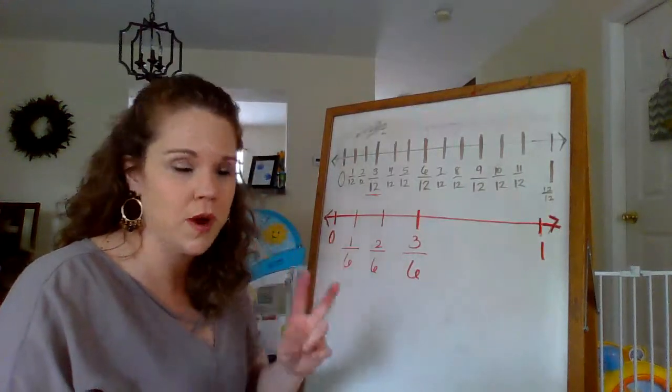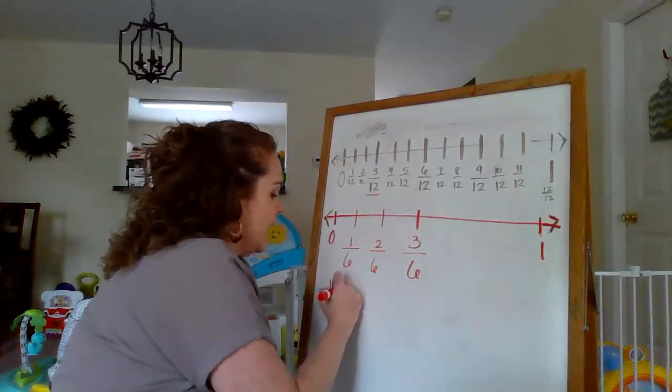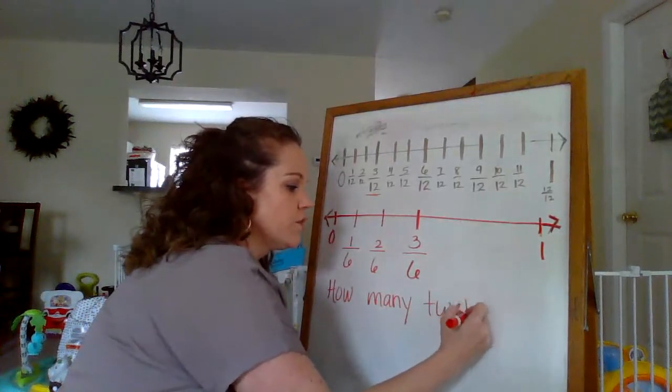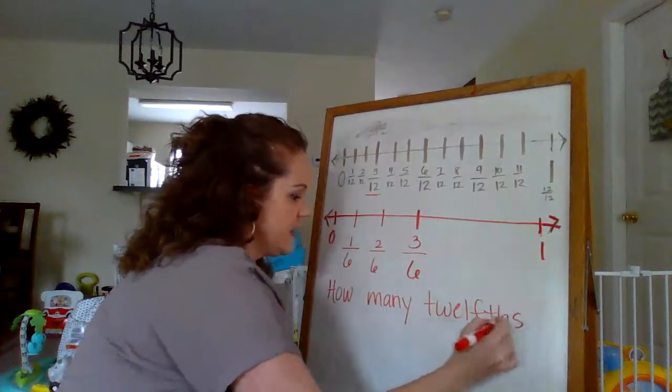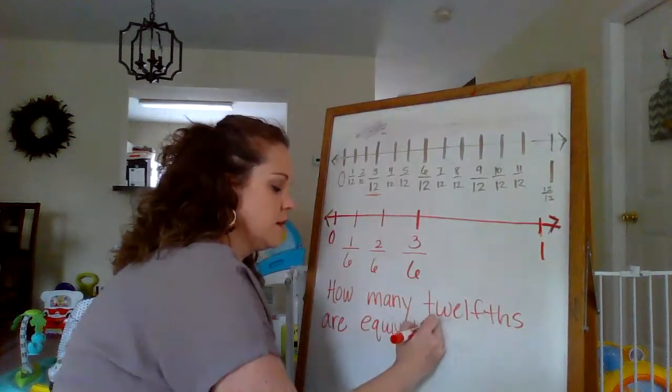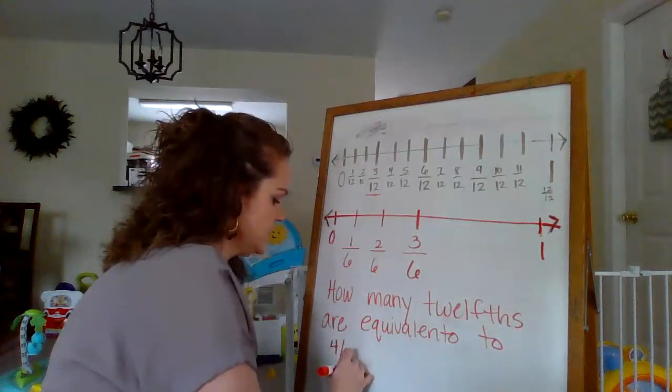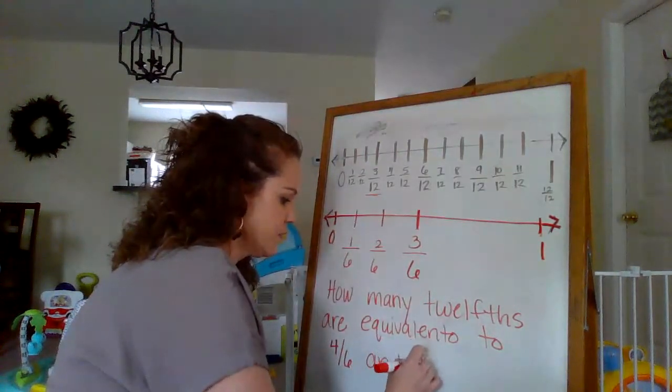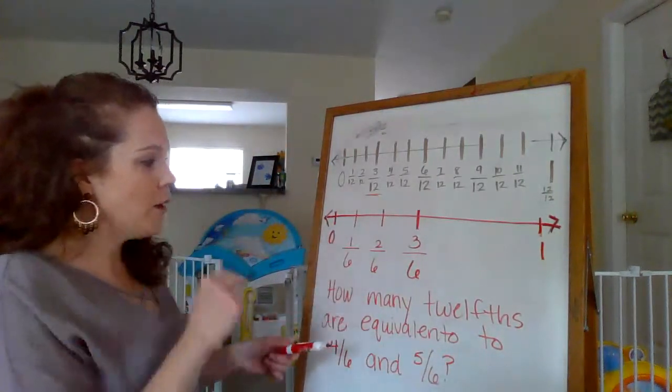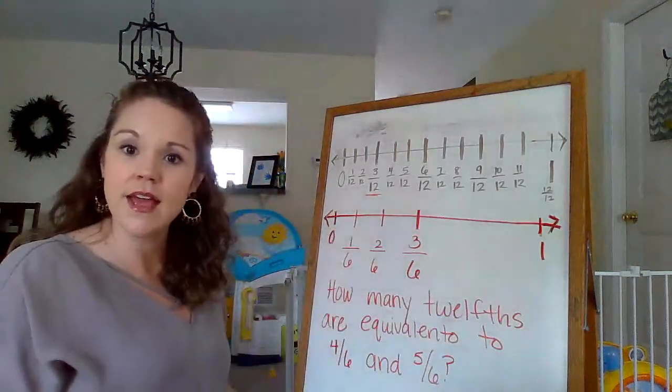So you're going to tell me what goes in here. You're going to tell me how many twelfths, that's hard to say, are equivalent to 4 sixths and 5 sixths. So you're going to have to figure out how many twelfths are equivalent to 4 sixths and 5 sixths. So what is going to go there and there?